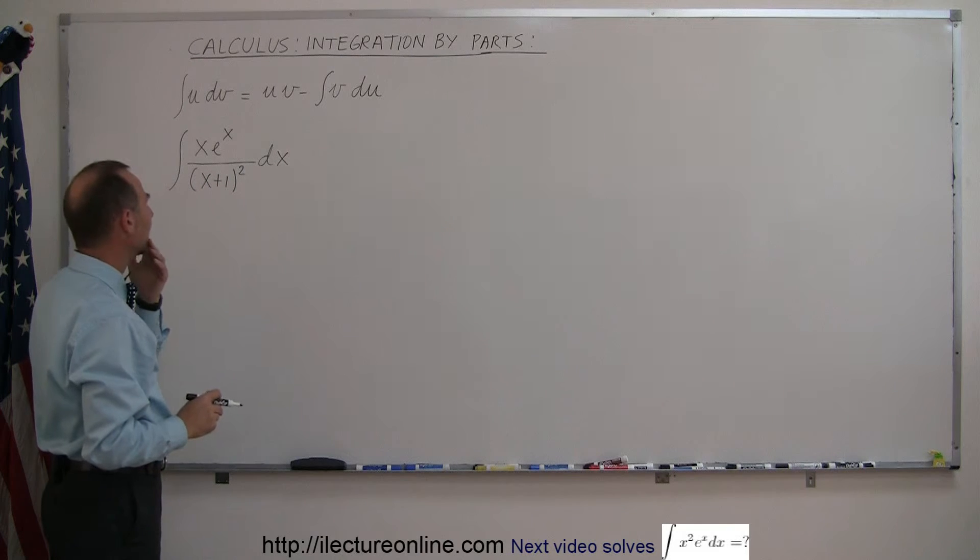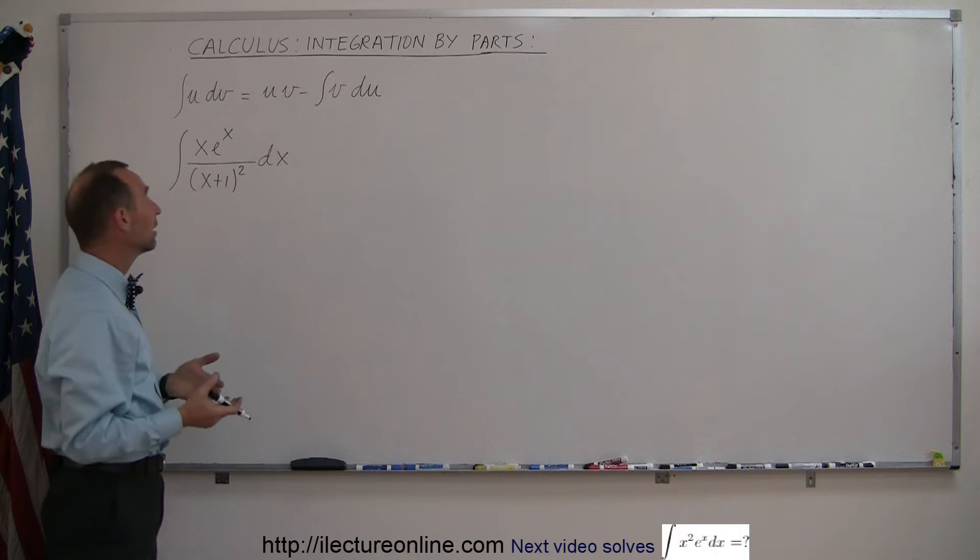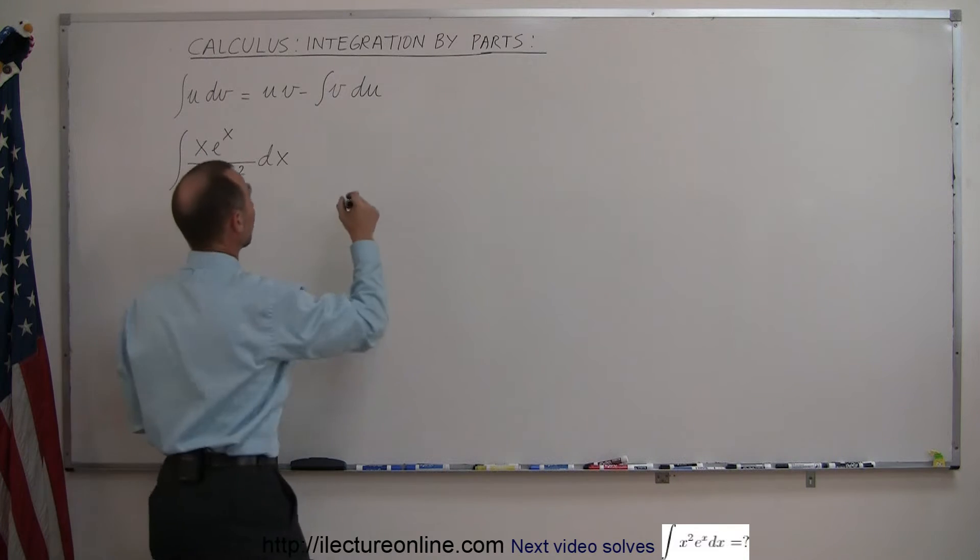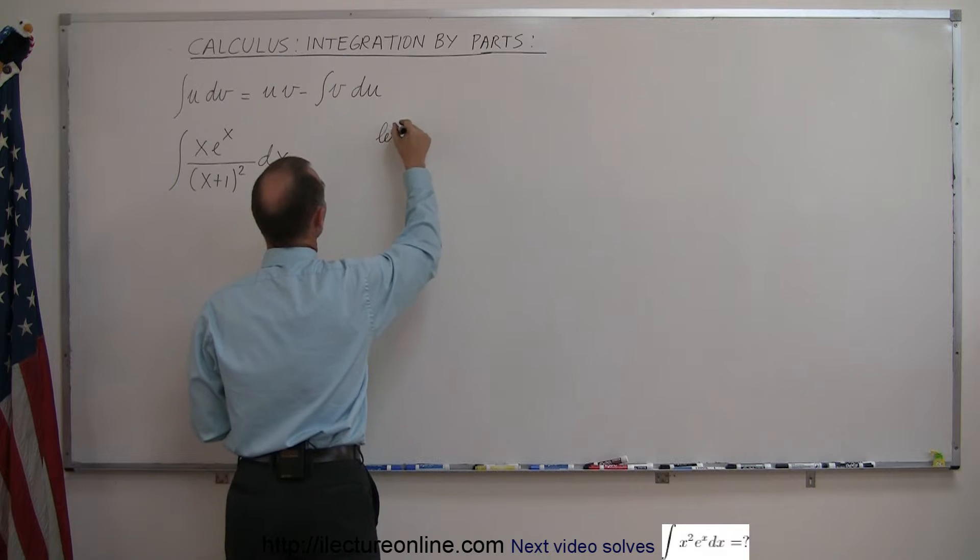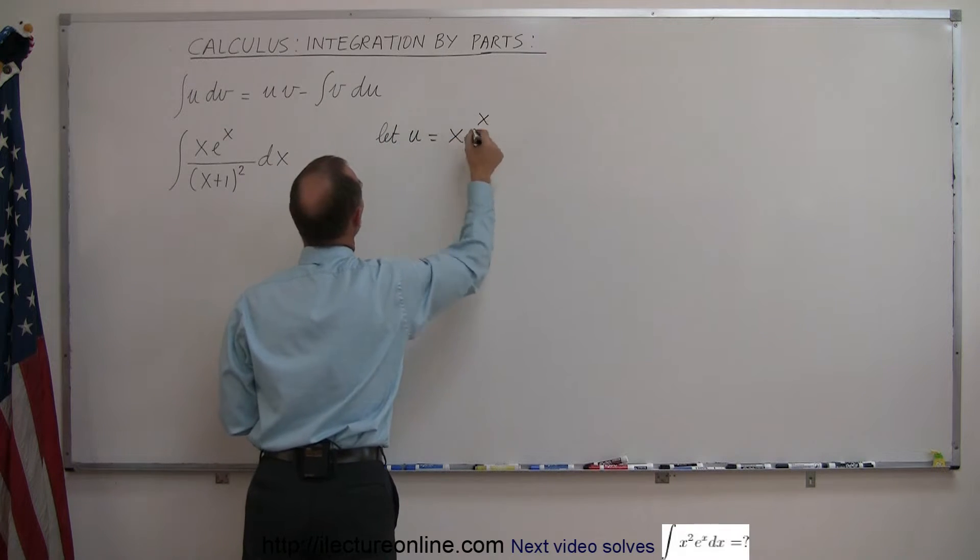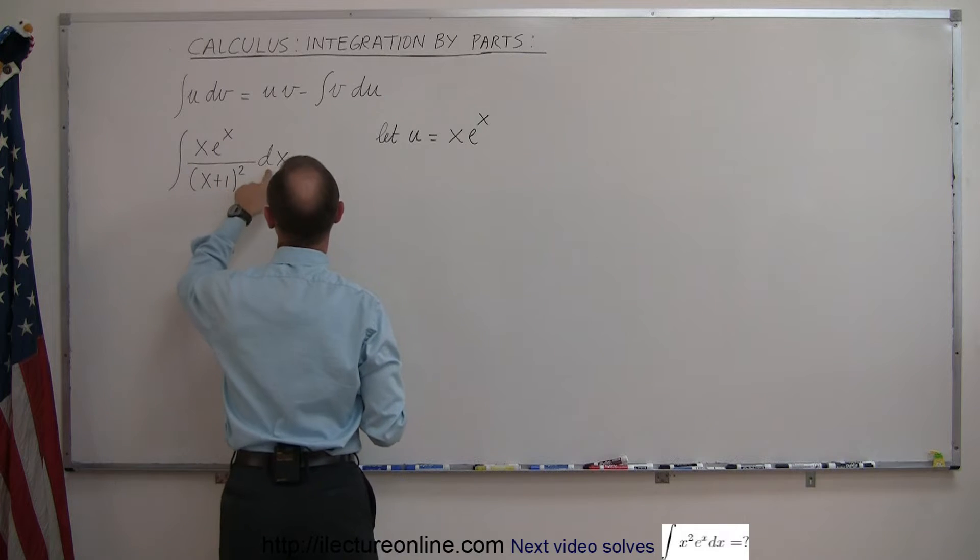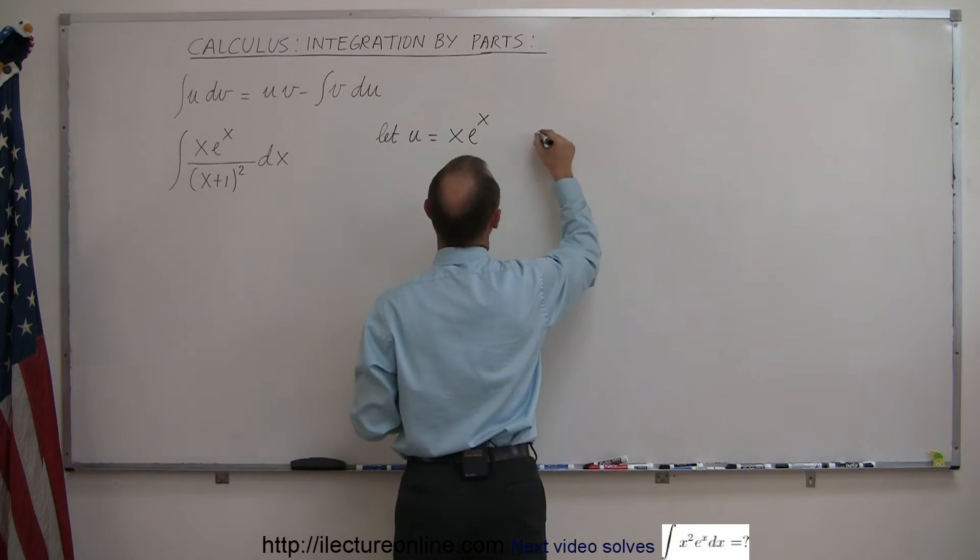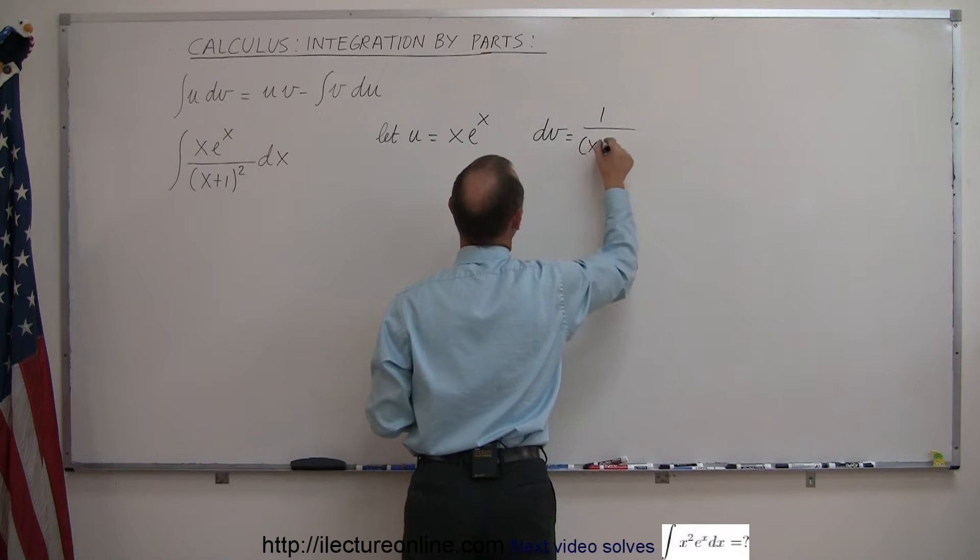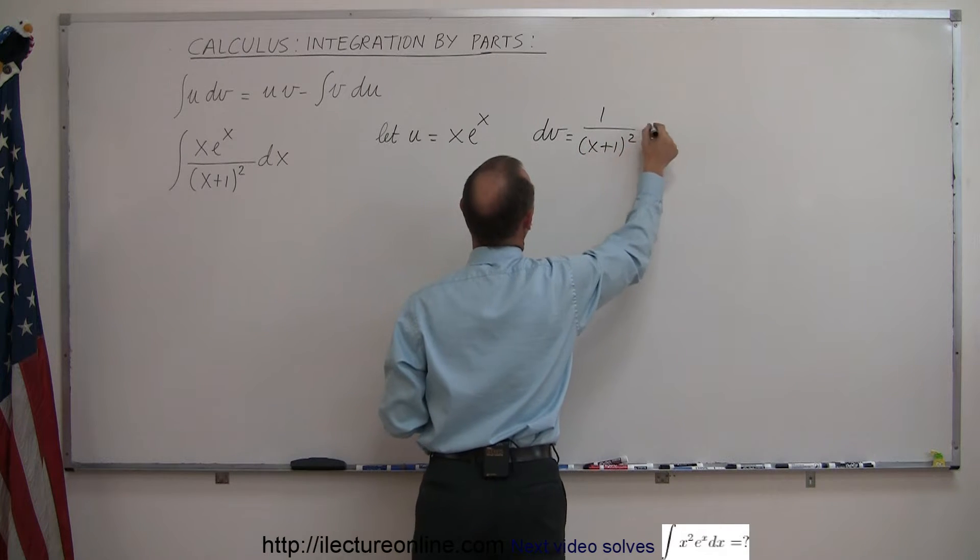So what should u be? Well we want it to be something that's easily differentiated and so x e to the x is an easy differential. So let u equal the numerator x e to the x, which means that 1 over this times dx is your dv. So then dv would equal 1 over x plus 1 to the second power dx.